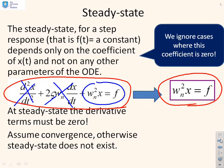There is a caveat: we have to assume convergence. There's no point trying to find the steady state of a divergent signal — it's a meaningless concept. But either way, the bottom line is the steady state comes solely from the expression ωn²x = f.